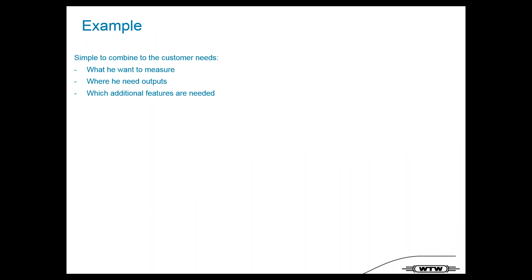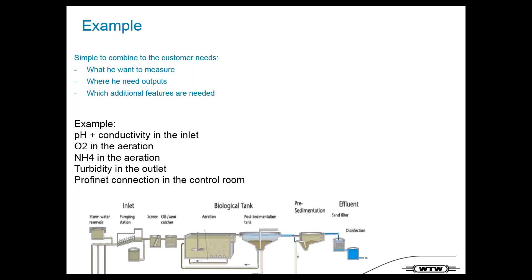Here is a simple example to show how easily you can realize a system. You need to ask what the customer wants to measure, which kind of outputs are needed, and which additional features are required. For example: pH and conductivity at the inlet, oxygen in the aeration, ammonium in the aeration, turbidity at the outlet, and transfer data via a PROFINET connection to the control room.